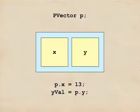A p-vector is just a single object with an x and a y inside of it. And you can get at either one just by naming the variable, here p, followed by a period, and then either x or y.